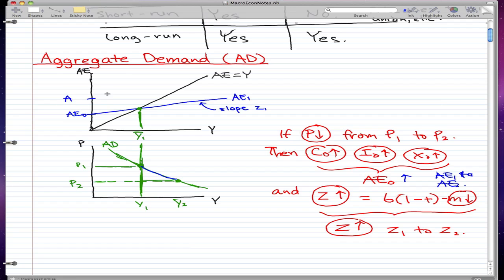In essence, this blue line pretty much shifted up, and that is what will happen to our graph. Let's have this be AE2. This was AE1. Let's draw this new line that we have, and this will be our new AE2.